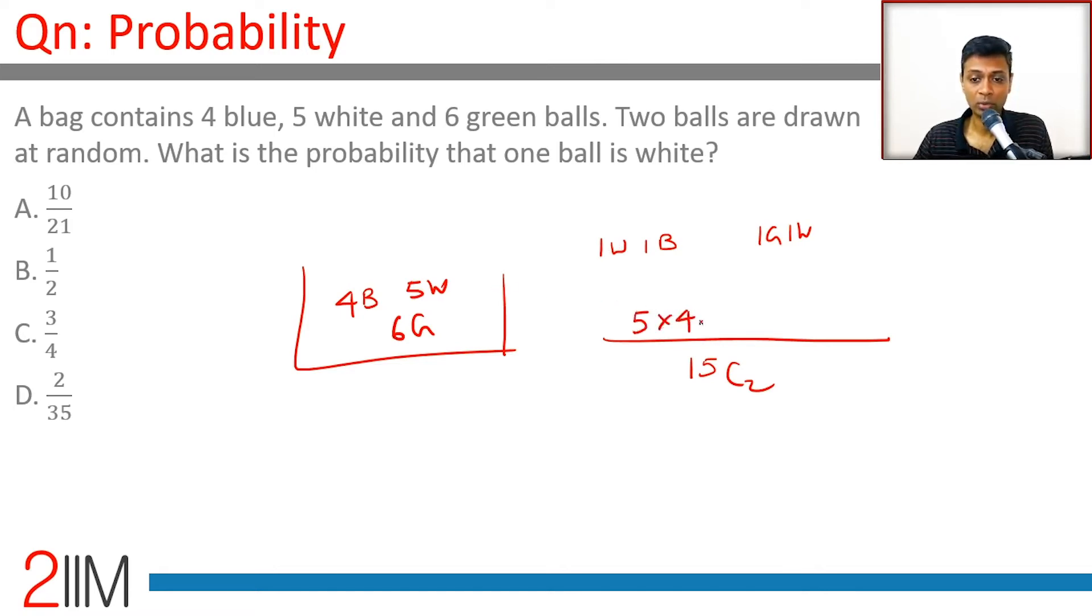One white and one blue is 5 times 4. One green and one white is 6 times 5. So that's 5 times 4 plus 6 times 5, divided by 15C2. 15C2 is 15 times 14 divided by 2, which equals 15 times 7.